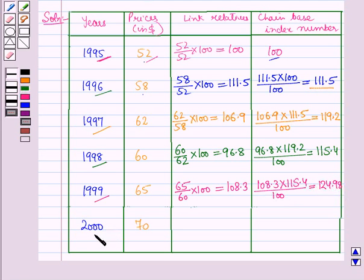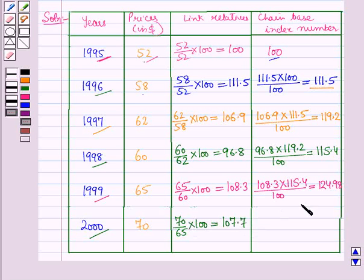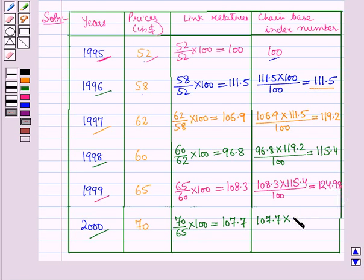For the year 2000, the link relative is 70 over 65 into 100, which is equal to 107.7, and the chain base index number is equal to the link relative of the current year, that is 107.7, into the chain index of the previous year, that is 124.98, all upon 100, and this is equal to 134.6.